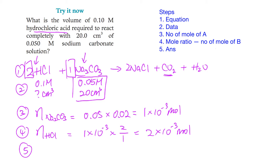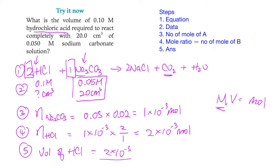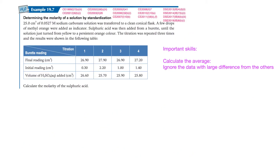Finally, find the volume of HCl. Using n = MV, rearrange to V = n ÷ M = 2 × 10⁻³ ÷ 0.1 = 0.02 dm³. You can convert this to cm³ as well. So basically the calculation process is like this.